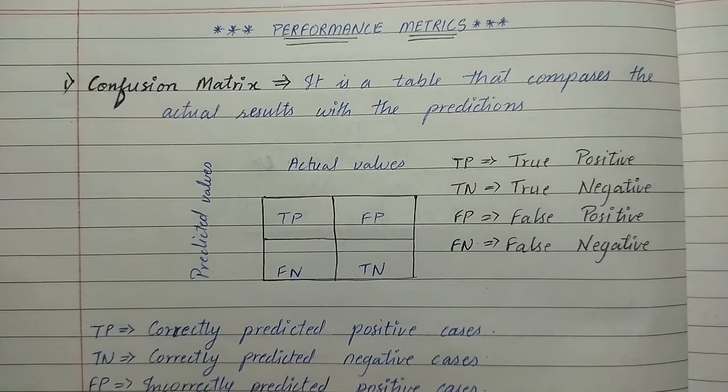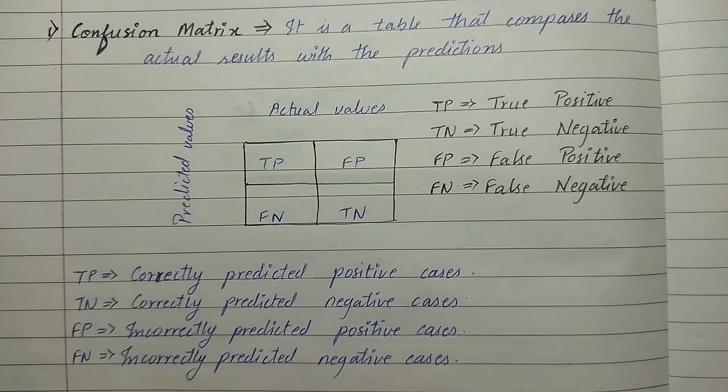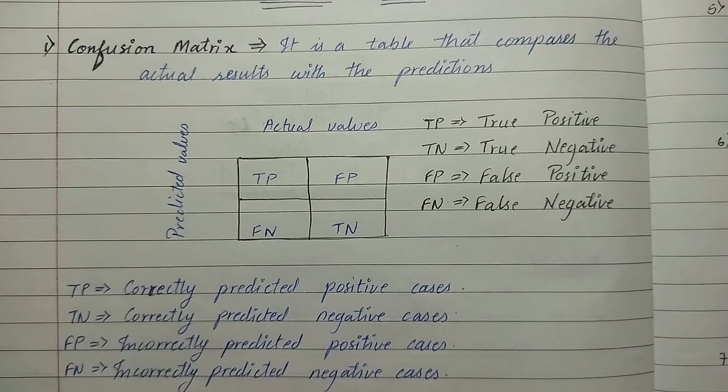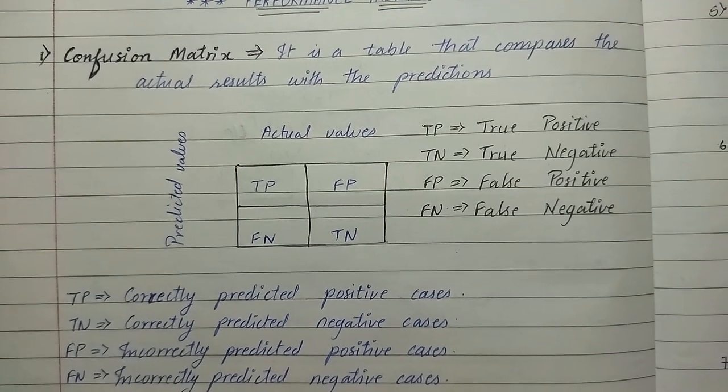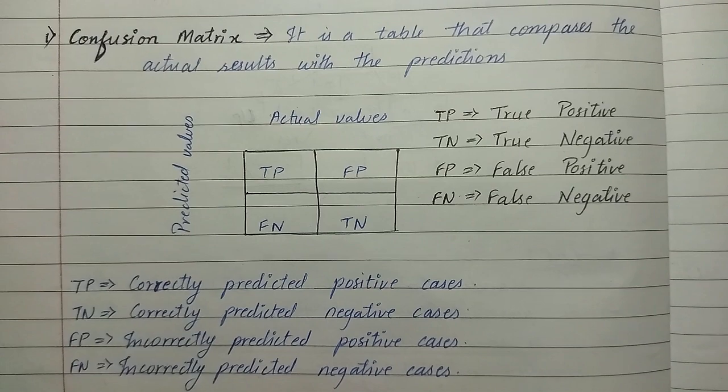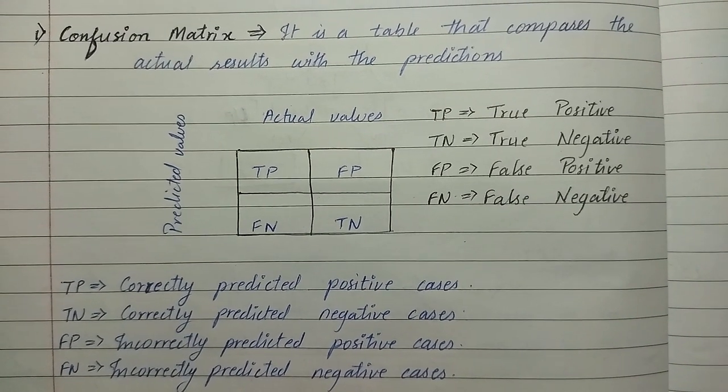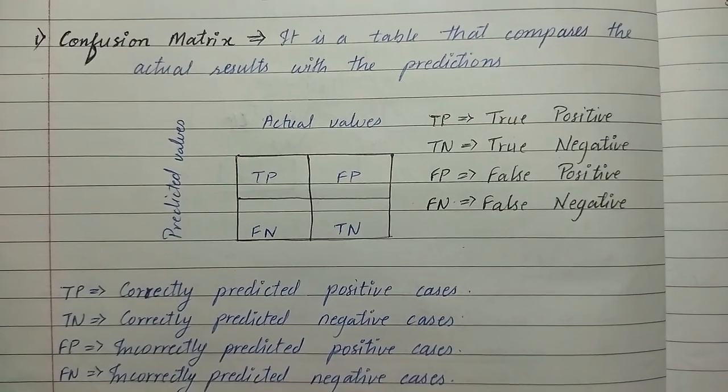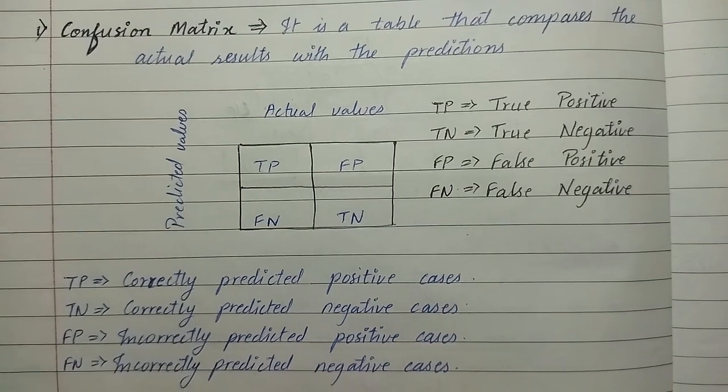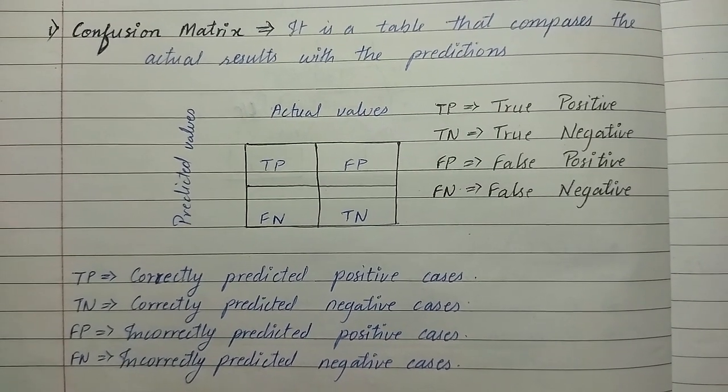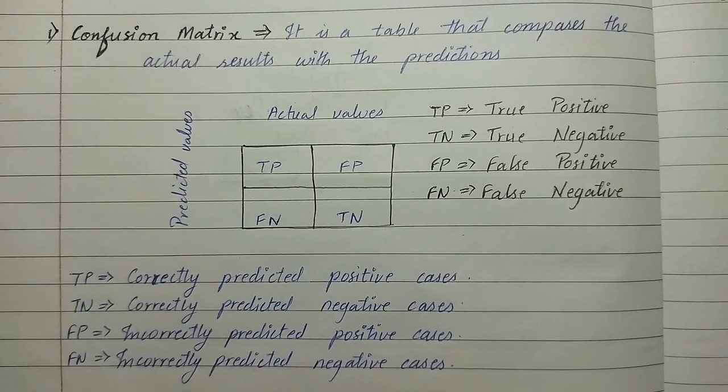That is predicted values and actual values: true positive, false negative, false positive, and true negative. TP stands for true positive, TN stands for true negative, FP is false positive, and FN is false negative.